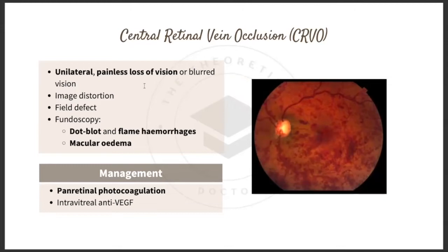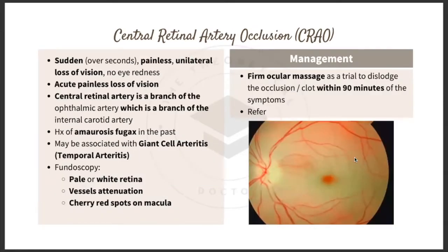Central retinal vein occlusion (CRVO) presents as unilateral painless loss of vision or blurred vision, with image distortion and visual field defects. On fundoscopy, you notice dot, blot, and flame hemorrhages against a red background, along with macular edema.